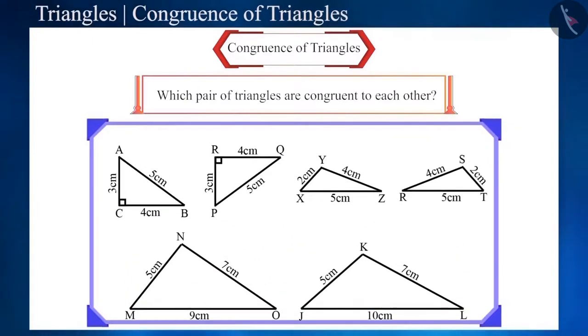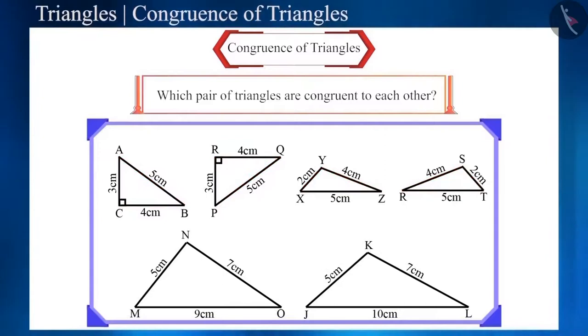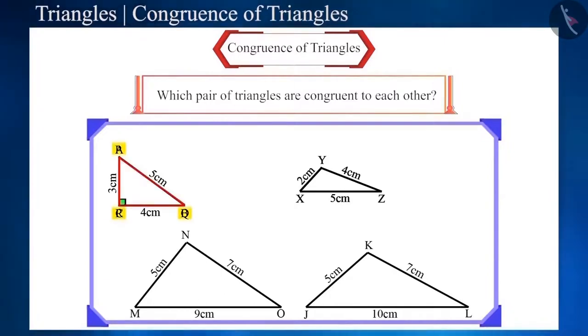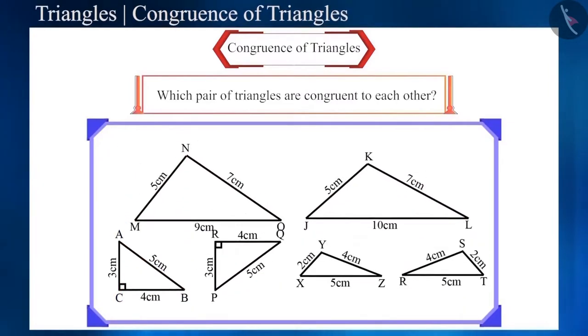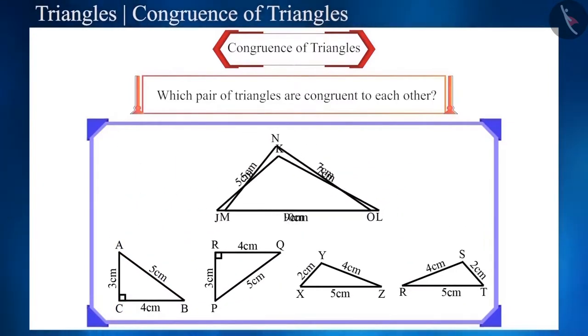We can see the congruent pair of triangles by keeping the corresponding equal sides on top of each other. The vertex, sides, and angles of the triangles are fitting exactly on each other. And the triangles that are not congruent are not covering each other completely.